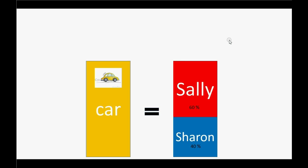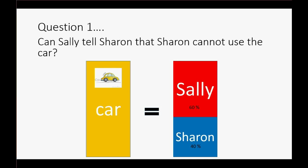You know more about owner's equity than you realize. For example, question 1: Can Sally tell Sharon that Sharon cannot use the car? Of course not. You know from your life experience that if you bought 40% of something and someone else owns 60%, you can still use it and the person who paid more can't tell you that you could never use it. That idea of owner's equity you already have.